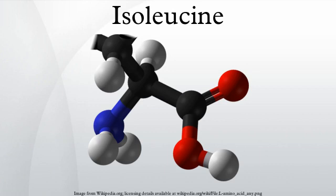Isoleucine is an I plus or minus amino acid which is essential in humans. The 'iso' in its name refers to it being an isomer of leucine.